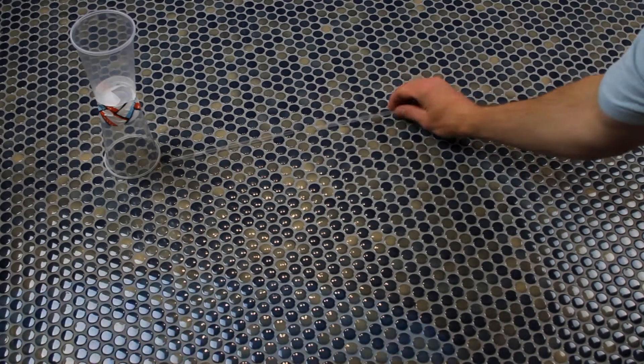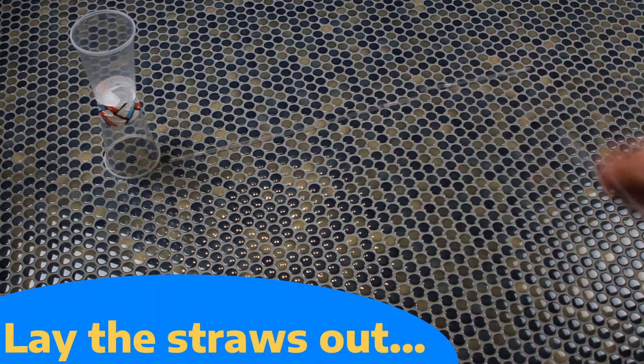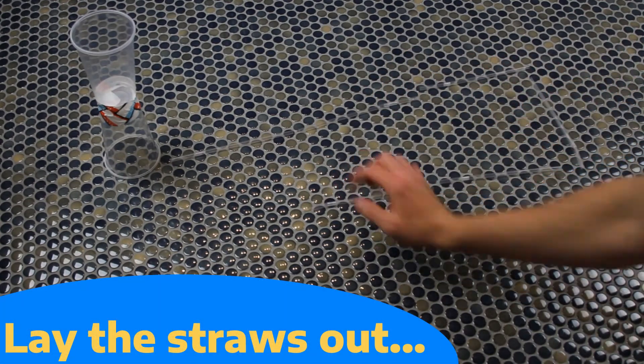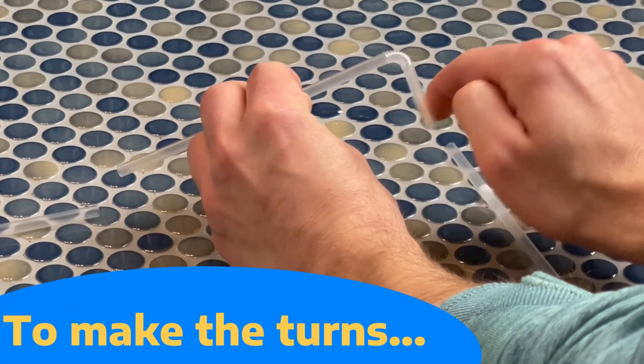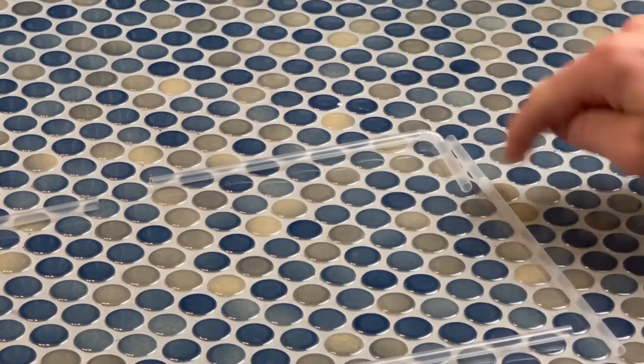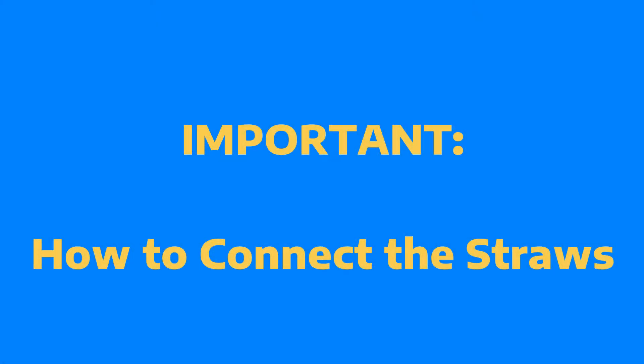So next up, refer back to your design that you should have sketched on paper and begin to lay your straws out in that orientation. Remember, you must make a few turns in your design. We recommend using the bendy portion of the straw to do so.